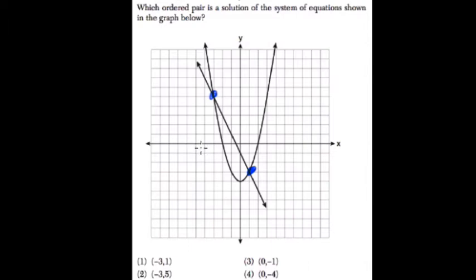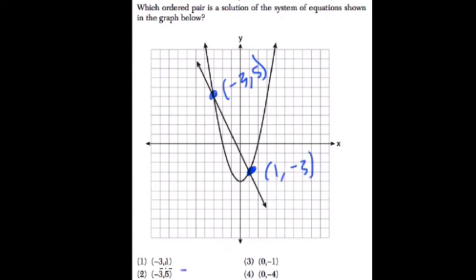So these two points are what? This is negative 3, and then 1, 2, 3, 4, 5 — so this is negative 3, 5. And this point here is 1, negative 3. So the choice they gave you is negative 3, 5. Choice 2.